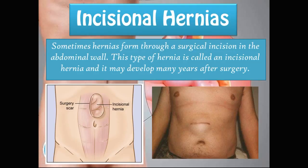Sometimes hernias form through a surgical incision in the abdominal wall — this is called an incisional hernia and it may develop many years after surgery. If the patient has undergone previous surgery, the incision acts as a point of weakness and the intestines may protrude through it. It is also worth noting that all these hernias develop under the skin, not through the skin.